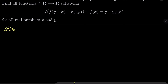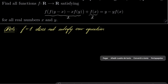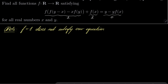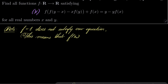Note that the function which is constantly 1 does not satisfy our equation. Because on the left-hand side we have 1, here we have 1, and here we have 1 minus y, which is 0. So 1 plus 1 is not equal to 0. Let's mark this equation asterisk. This means that f(x₀) ≠ 1 for some real number x₀. Now let's set x equal to x₀ in our equation asterisk.